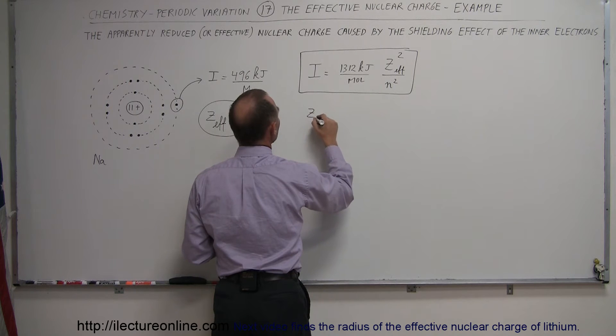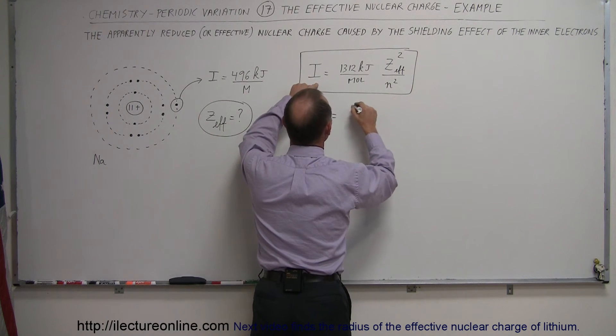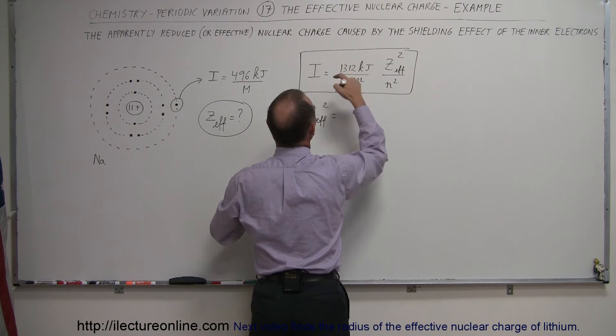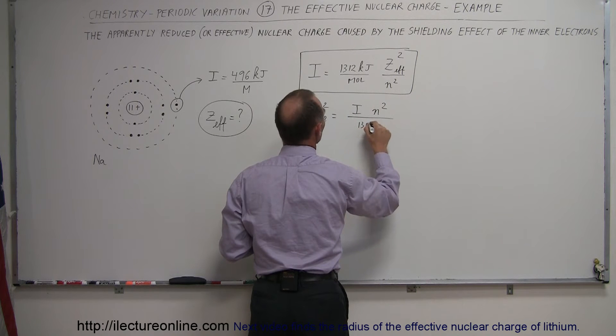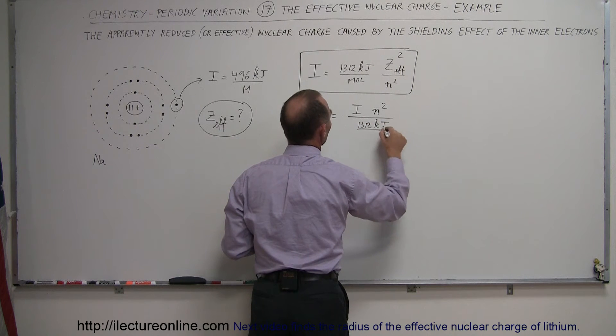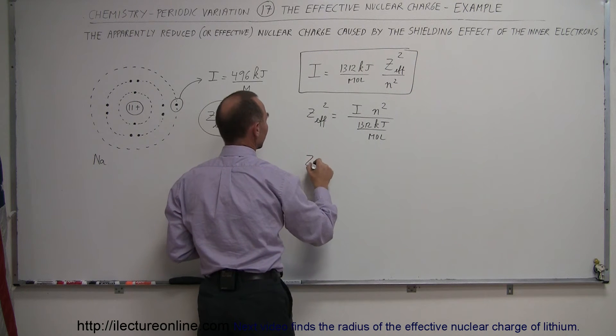So this becomes Z-effective squared is equal to the ionization energy times N-squared divided by 1,312 kilojoules per mole. And then, to find Z-effective, we simply take the square root.